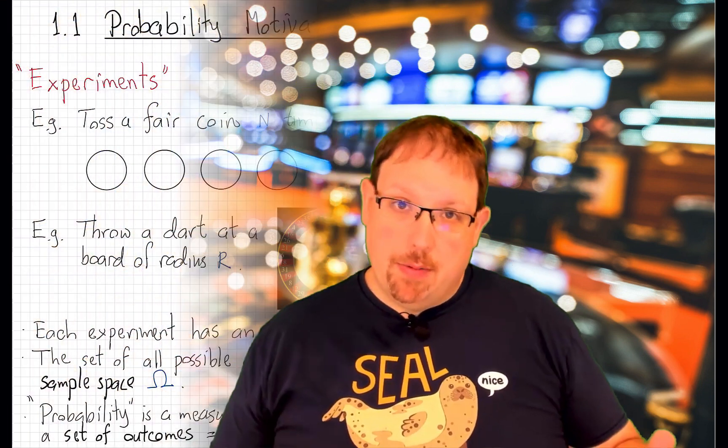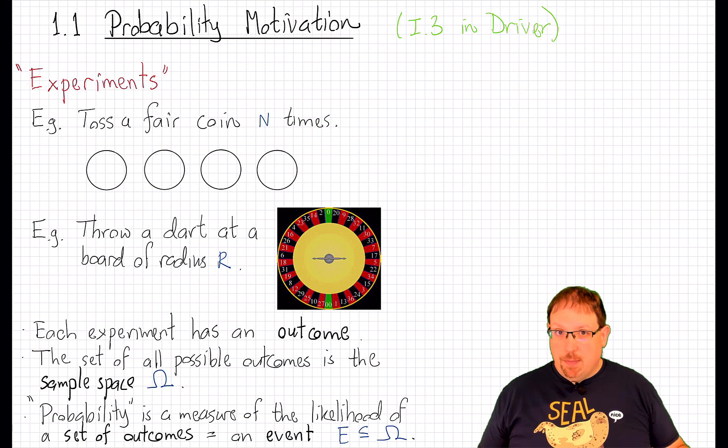But we might be interested in more than tossing just one coin. We might be interested in tossing it a number of times. For example, four times. If I toss a fair coin four times, there are lots of possible outcomes. In fact, 16 possible outcomes.